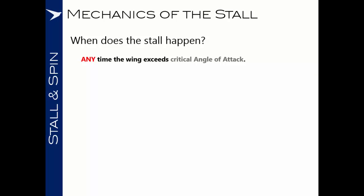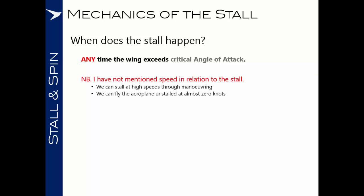When does the stall happen? Any time the wing exceeds the critical angle of attack. Note that I've not mentioned speed in relation to the stall at all. We can stall at high speeds through maneuvering and we can fly the airplane unstalled to almost zero knots. Speed is completely irrelevant here.